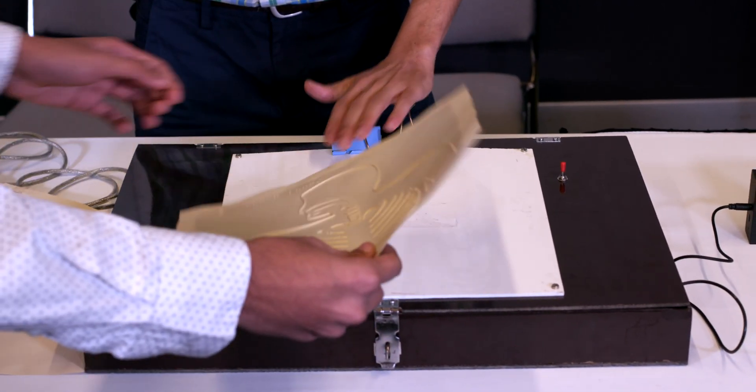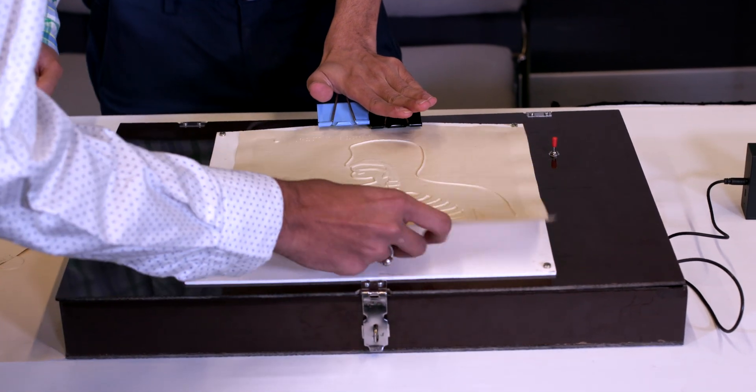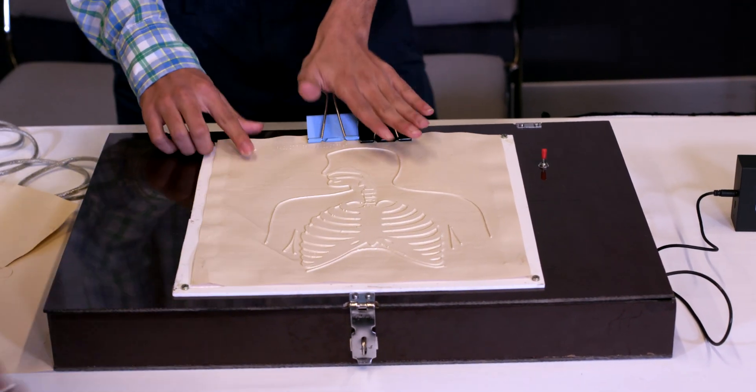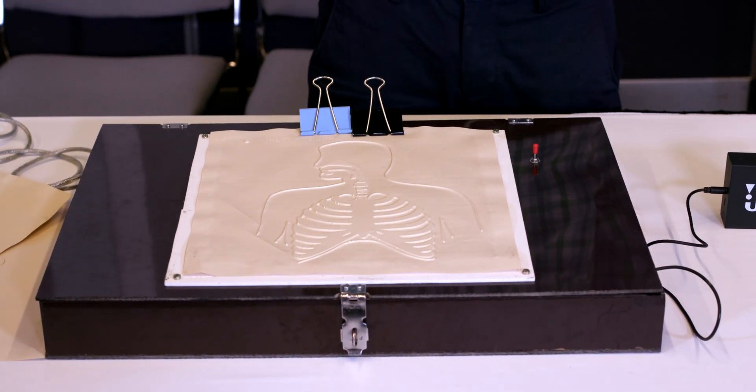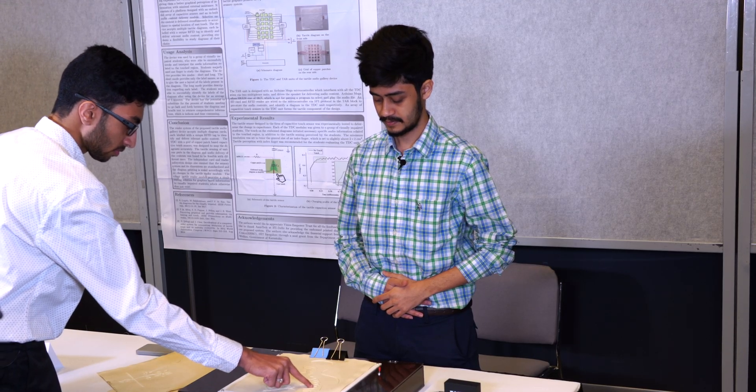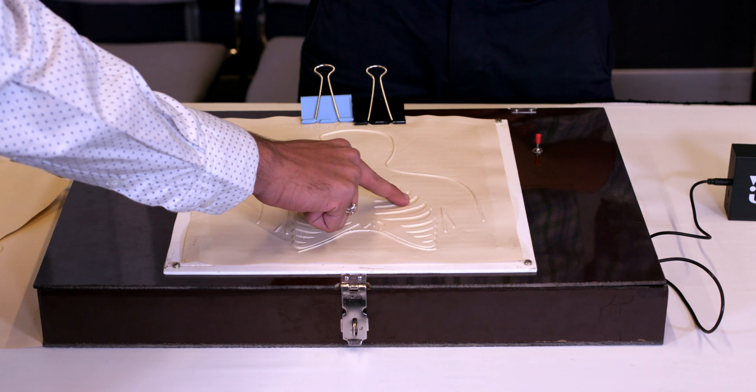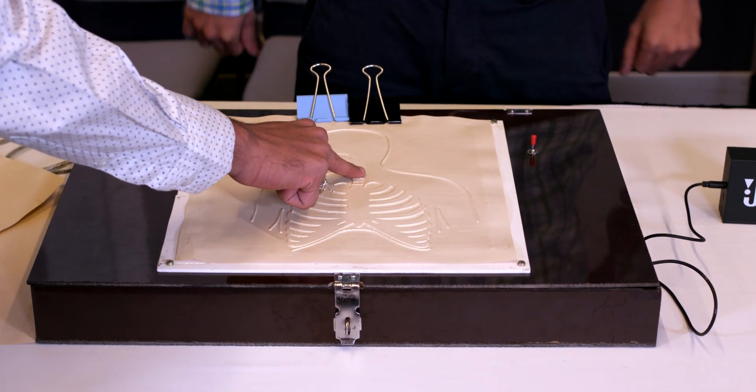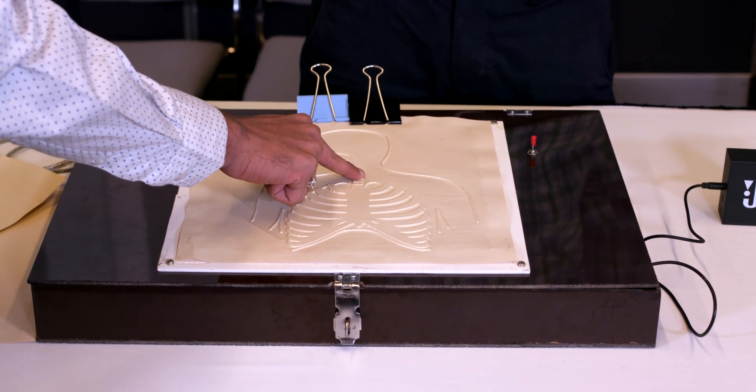Once a student is done studying one diagram, they can very easily move on to the next. Device is in long mode. This diagram depicts the structure of the human respiratory system. The rib cage lies in the chest area. It protects. The windpipe connects the nose to the lung.